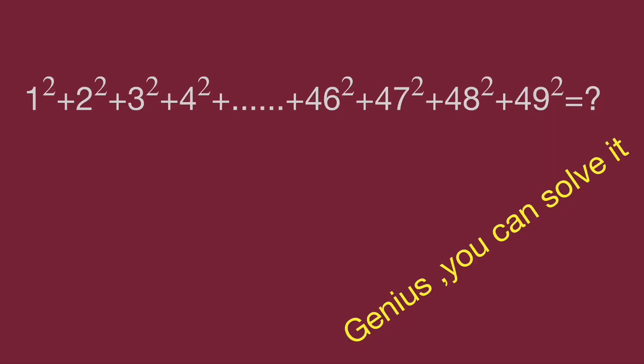Hello, you are watching Barahipo Math Genius Readdle. The question is to find the sum of 1 square plus 2 square plus 3 square, dot dot dot, 47 square plus 48 square plus 49 square. Can you calculate the value? Pause the video and sum the items by yourself while you are ready. Keep watching the video to find the result.